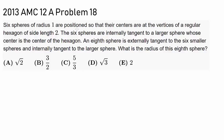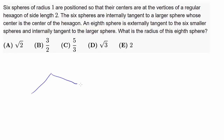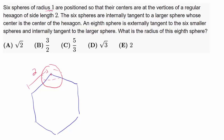6 spheres of radius 1 are positioned so that their centers are at the vertices of a regular hexagon of side length 2. We have this regular hexagon, and the 6 spheres are positioned at its vertices. Since the side length of the hexagon is 2 and the radius of each sphere is 1, two adjacent spheres should be tangent at exactly one point.